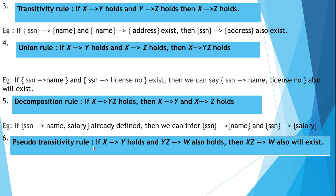The third rule is the transitivity rule. If x to y exists and y to z exists, then we can define a dependency from x to z. For example, if SSN to name is already defined and name to address is already defined, we can define a new functional dependency from SSN to address.